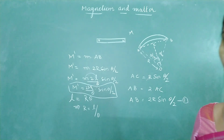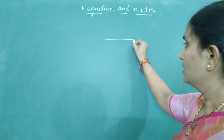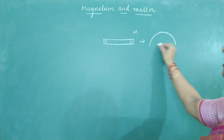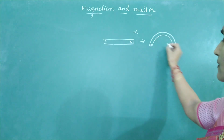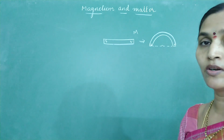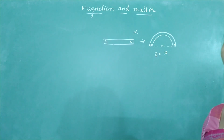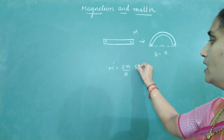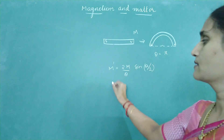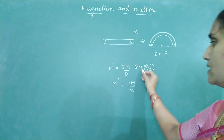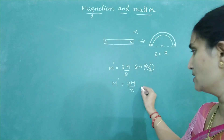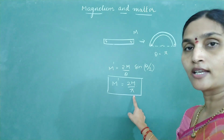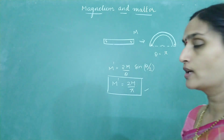If a bar magnet of magnetic moment capital M is bent in the form of a semicircle, determine the new magnetic moment. For a semicircle, theta equals 180 degrees, written as pi radians. Applying the formula M dash equals 2M by theta into sine theta by 2, we get M dash equals 2M by pi into sine 90. Since sine 90 equals 1, the new magnetic moment is 2M divided by pi.